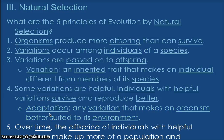And the fifth one — I'm sorry, it's cut off on screen, so you're going to have to listen. Over time, the offspring of individuals with helpful variations make up more and more of the population, and eventually become a separate species — that's what is missing on screen. I'll repeat that: over a long, long time, the offspring of individuals with helpful variations make up more of the population and eventually become an entirely separate species.